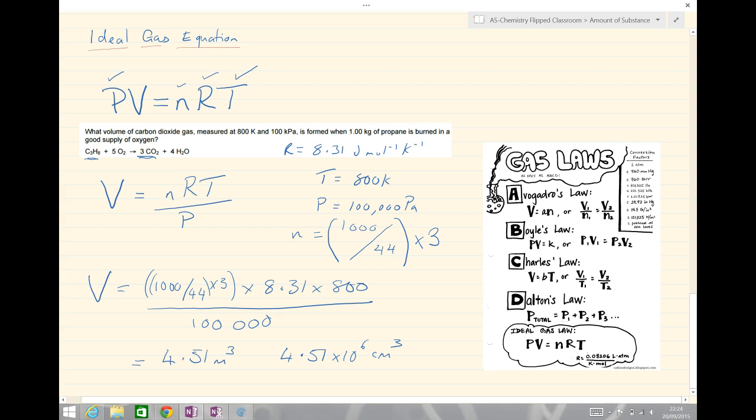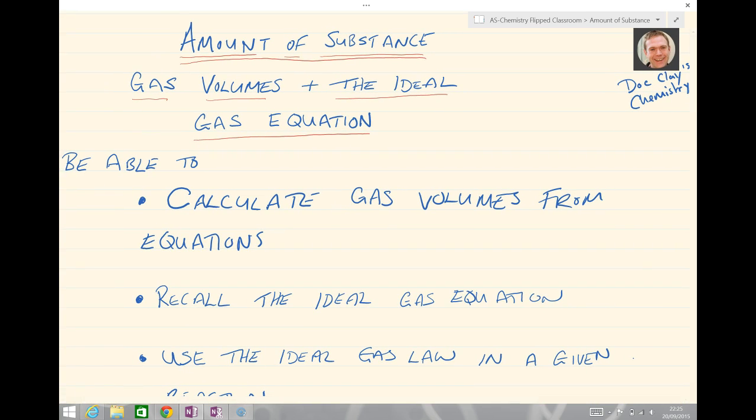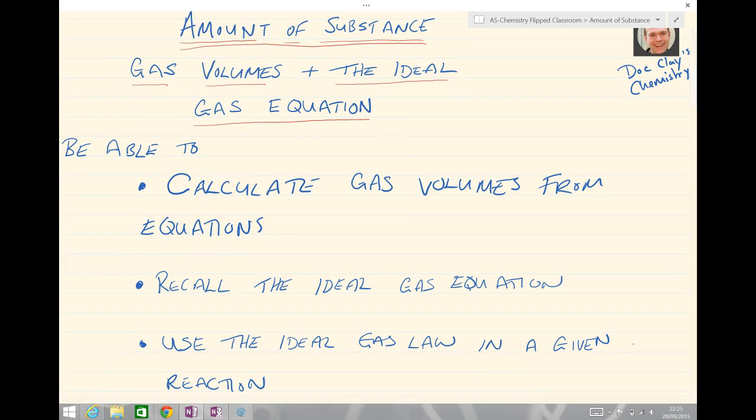We've got to be able to use that equation. Perhaps instead of volume we might be required for pressure or we might be trying to work out temperature. That comes to the end of our lesson on the ideal gas equation and volume equations. We've looked at amount of substance, gas volumes and the ideal gas equation. You should now be able to calculate gas volumes from equations, recall the ideal gas equation PV equals NRT, remember the specific units that we use for these, and use the ideal gas law in a given reaction.